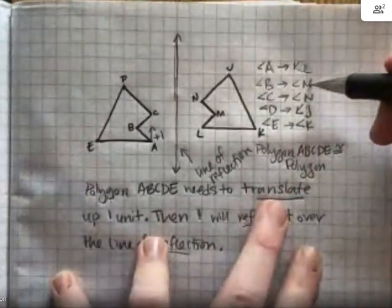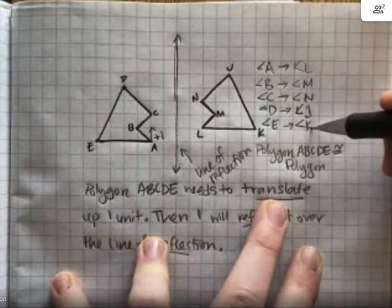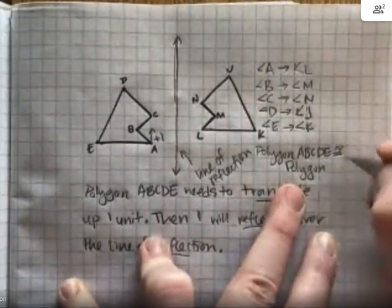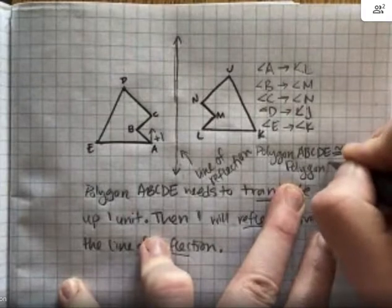Polygon L, M, N, J, K. Now listen to that. That's not how we do the alphabet.